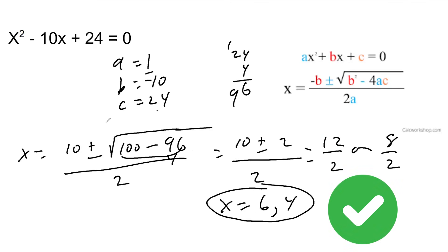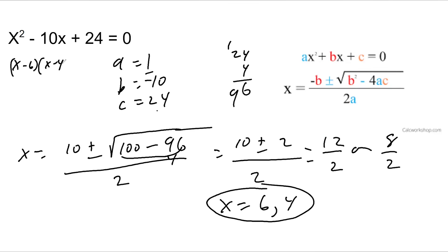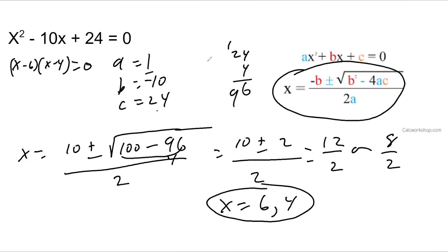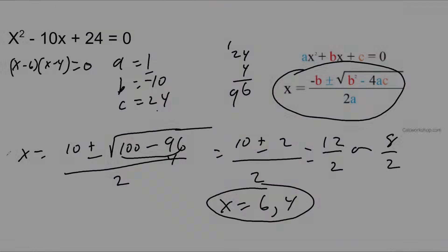Obviously I could have factored this — x minus 6 times x minus 4. So I could have just skipped the quadratic formula and done the factoring. But sometimes when you do factoring, you don't see it right off. The quadratic formula will always work, so if you get stuck, you can always use it. And if you could have factored it, no big deal — it wasn't too much work.